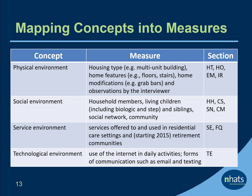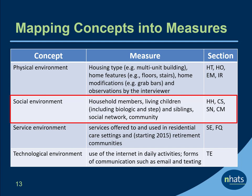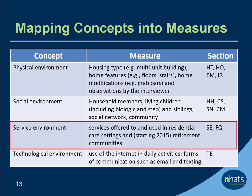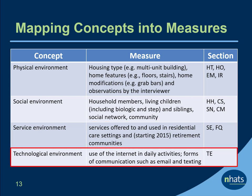NHATS also has detailed measures of the older adults' environment, including their physical, social, service, and technological environments. Measures of the physical environment include housing type, home features such as floors or stairs, home modifications such as grab bars, and observations by the interviewer. Measures of the social environment include household members, items about living children including both biological and step, siblings, the social network, and community cohesion. For those in residential care and since 2015 in retirement communities, the service environment is captured through questions about availability and use of services. Measures of the technological environment include use of the internet in daily activities and electronic forms of communication such as email and texting.